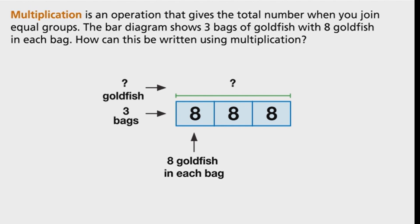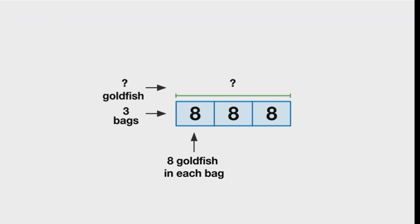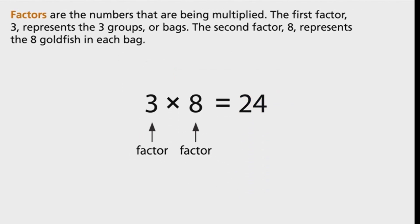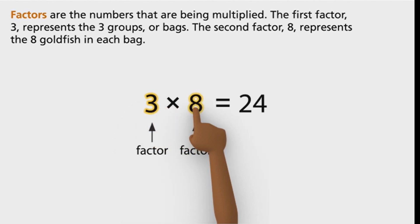There are three groups, or bags, with eight goldfish in each bag, so three times eight equals 24. Factors are the numbers that are being multiplied. The first factor, three, represents the three groups or bags. The second factor, eight, represents the eight goldfish in each bag.